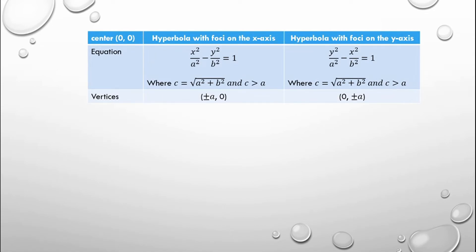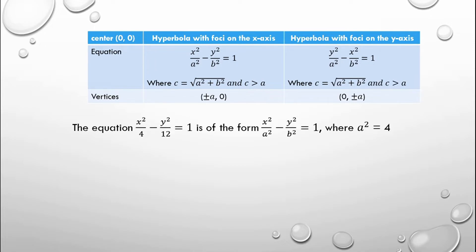These are the characteristics of the hyperbola. Just like the parabola, a hyperbola has many characteristics. For the equation, a hyperbola with foci on the x-axis has the equation x squared over a squared minus y squared over b squared is equal to 1. A hyperbola with foci on the y-axis has y squared over a squared minus x squared over b squared is equal to 1. The given equation x squared over 4 minus y squared over 12 equals 1 matches the first form since x squared comes first.